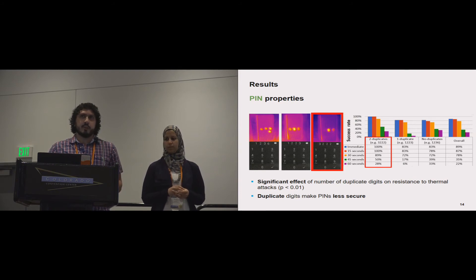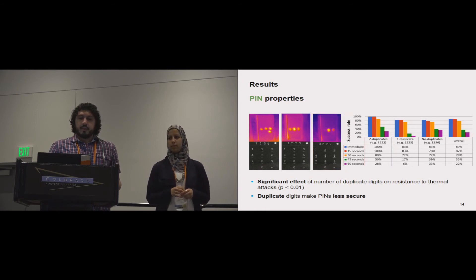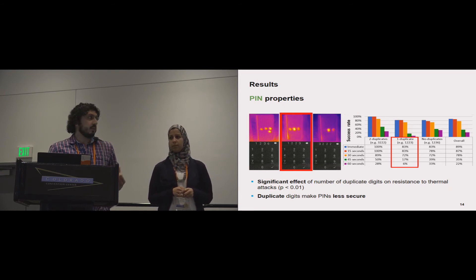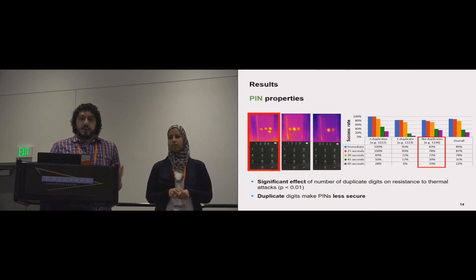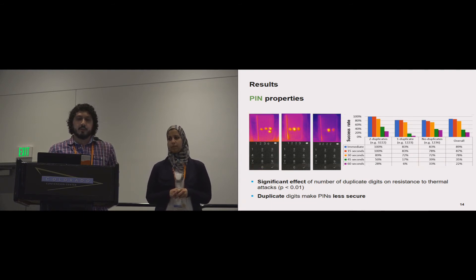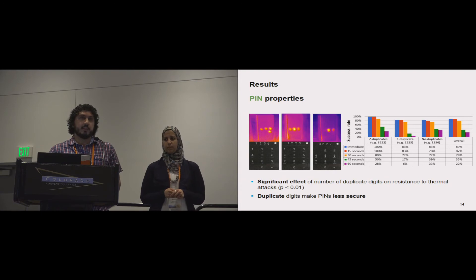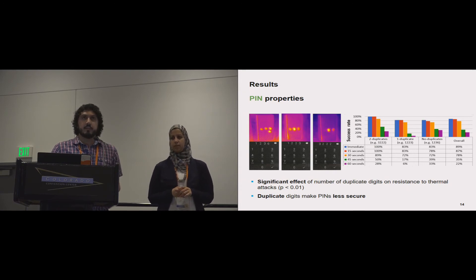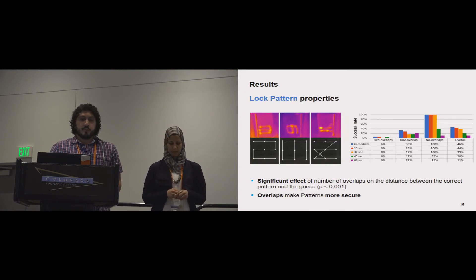When you have only one duplicate, the success rate is also high. In the first 30 seconds it's between 70 and 83 percent. When you have no duplicates, it's still also very high, between 70 and 80 percent. So actually from that we conclude that duplicates actually make PINs less secure against thermal attacks.